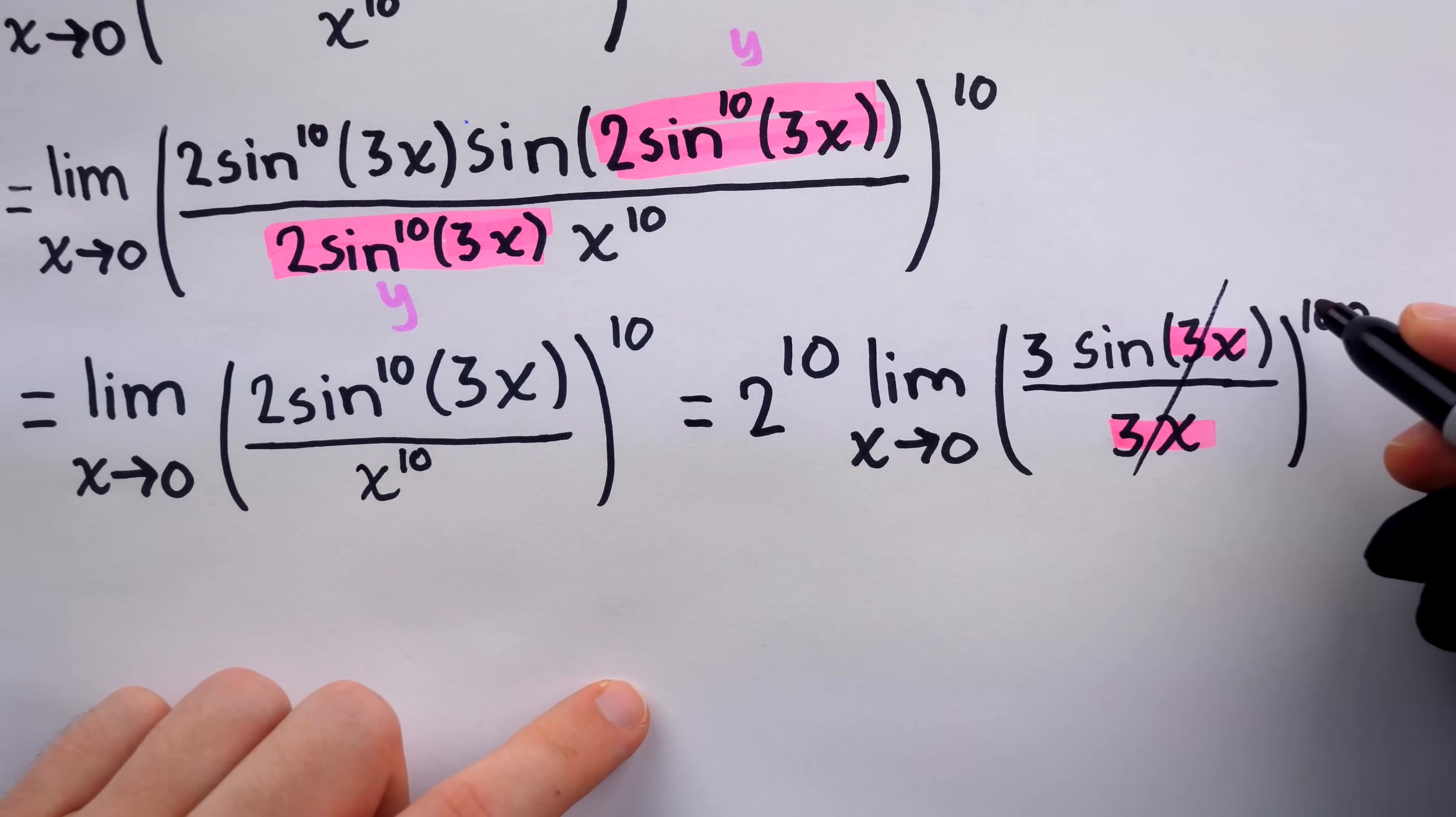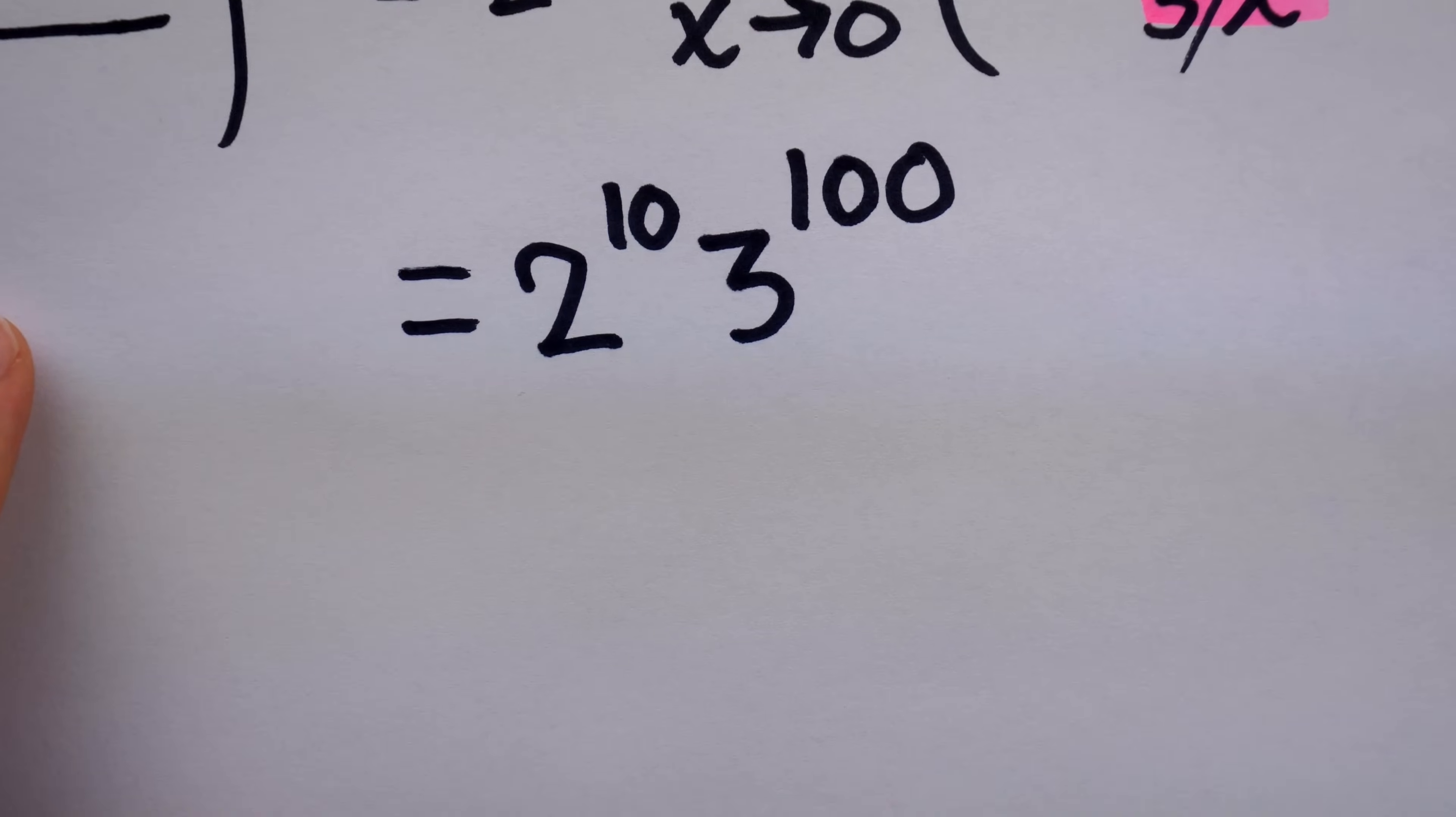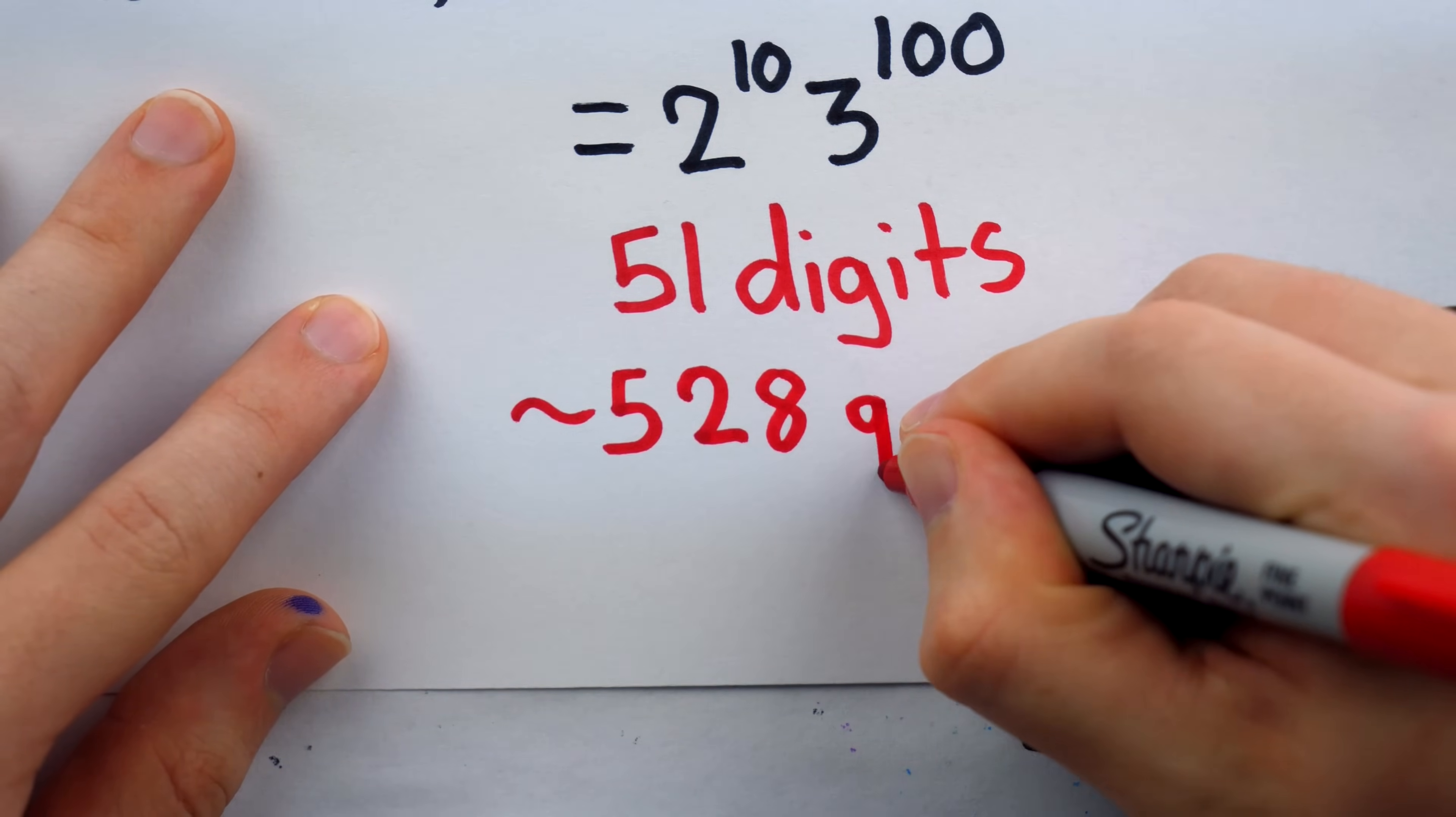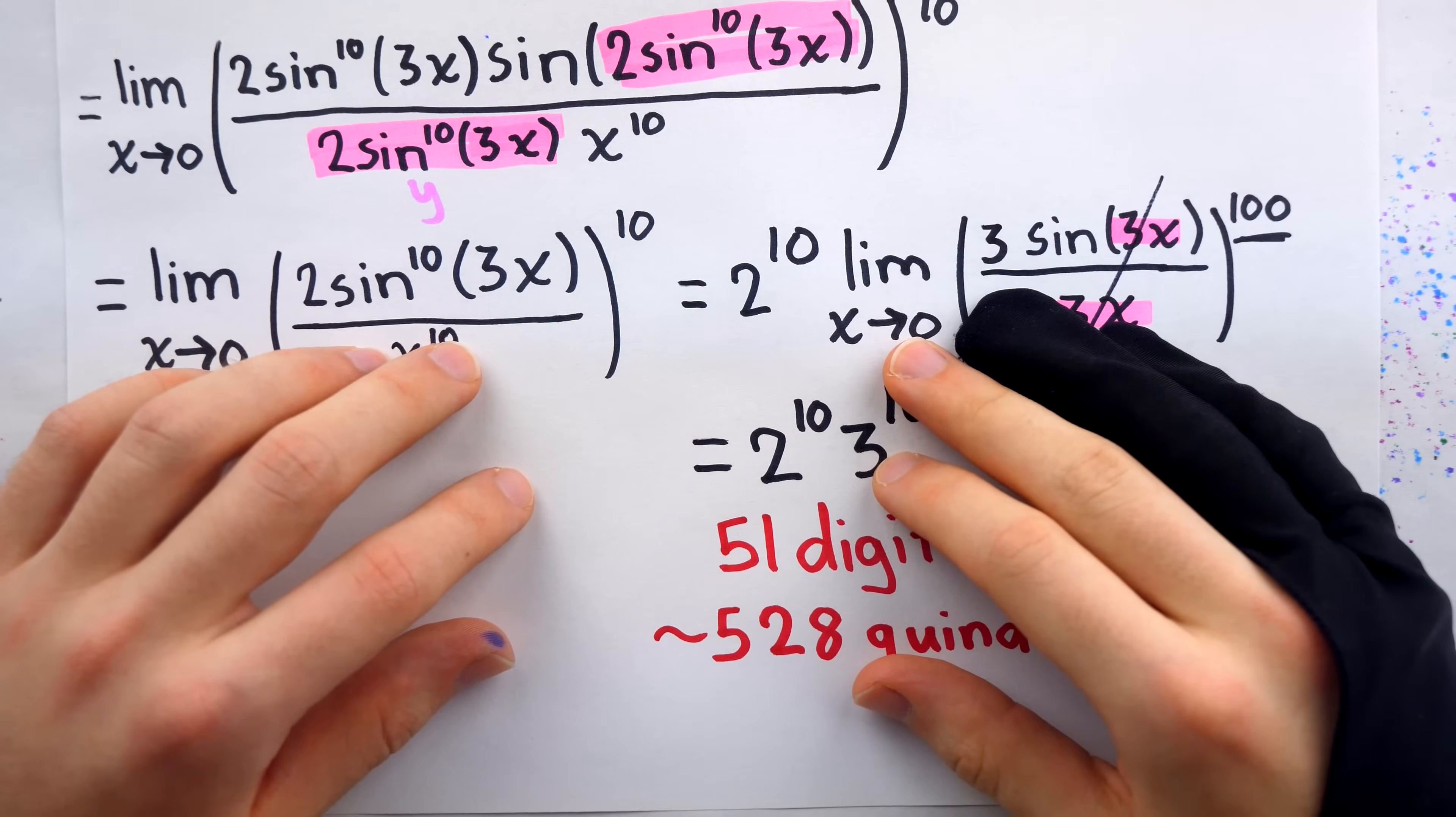So final answer is 2 to the power of 10 multiplied by 3 to the power of 100. And this is a massive number, totaling 51 digits. It is roughly 528 quindecillion. And I'm hoping they make at least this many editions of Stewart's calculus, because if they do, my first editions will be worth so much I could probably afford at least one more cat calculator.